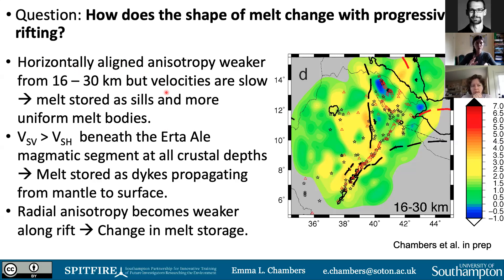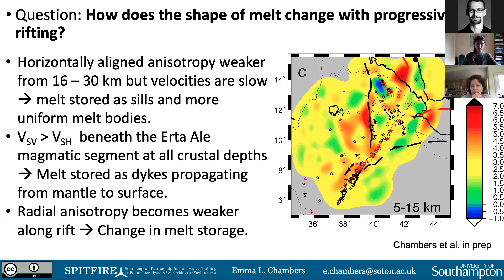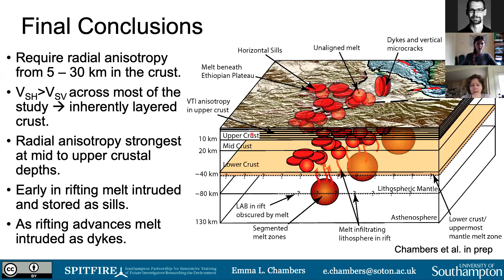Looking at the mid to upper crustal slice, radial anisotropy becomes weaker along the rift: we have the strongest horizontally aligned anisotropy in the rift here, becoming weaker further along, and even vertically aligned in the Afar region. This potentially shows a change in melt storage from earlier stages of rifting to the latest stages of rifting. This is an image from my thesis focusing on 10 to 40 kilometers depth for where the anisotropy is.